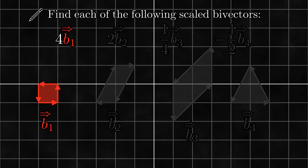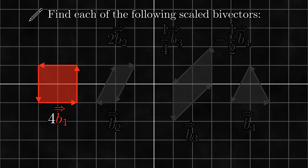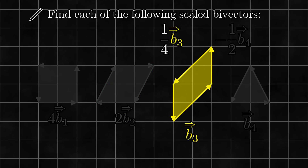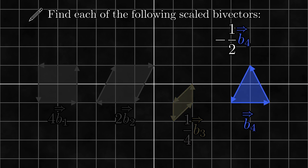For this first one, remember that area scales with the square of distance. Since we want to scale b1 by 4, we can do this by just scaling the side lengths of the square by 2, producing 4 times b1. For the second one, I'll just double one of the side lengths to produce 2 times b2. For the third one, to scale the whole bivector by 1 fourth, we can scale the side lengths by 1 half, producing 1 fourth times b3. For the final one, we need to cut the magnitude in half and flip the orientation, producing negative 1 half times b4.